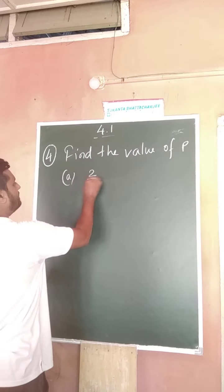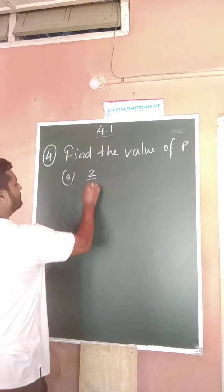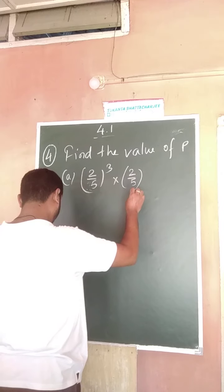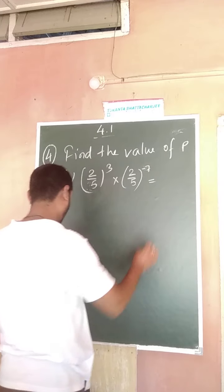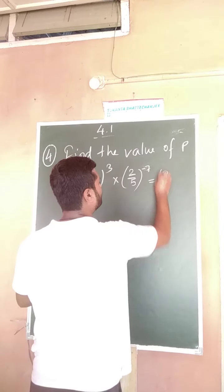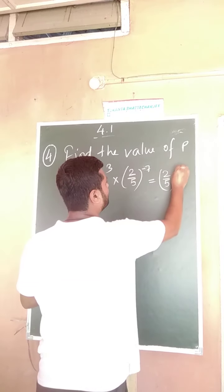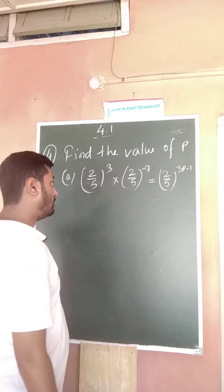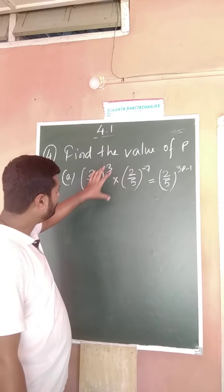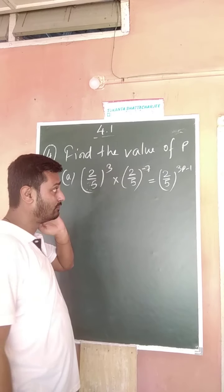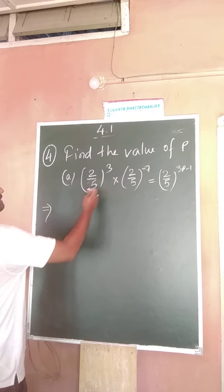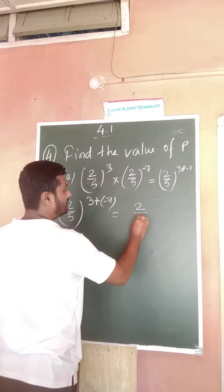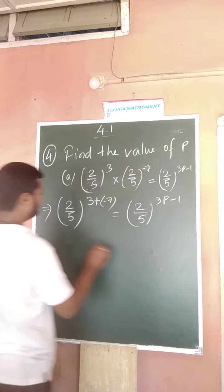The first one is: 2 by 5 whole to the power 3, into 2 by 5 whole to the power minus 7, is equal to 2 by 5 whole to the power 3p minus 1. You all did this type of question in class 7 — it is very easy and very important. Now, a to the power m into a to the power n equals a to the power m plus n, and the base remains the same.